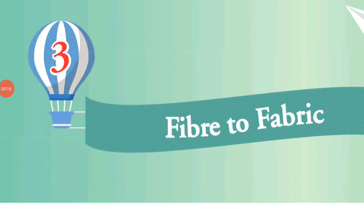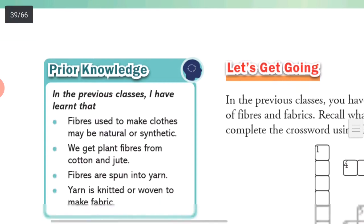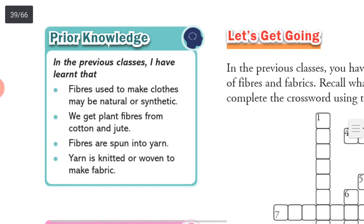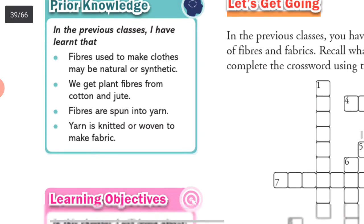We will continue the discussion on fiber. Fibers used to make clothes may be natural or synthetic. We get plant fibers from cotton and jute. Fibers are spun into yarn. Yarn is knitted or woven to make fabrics.